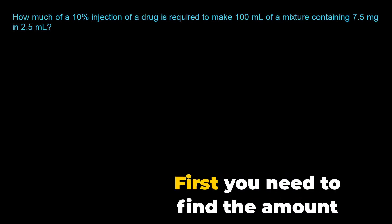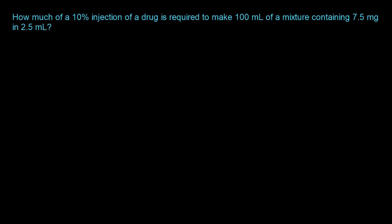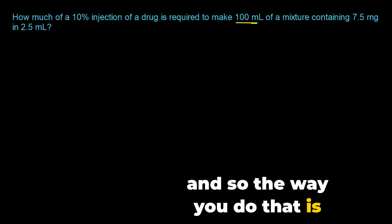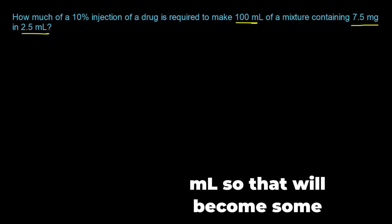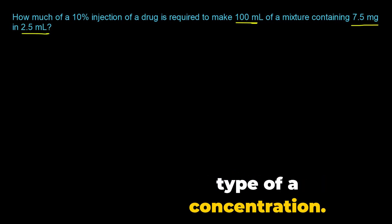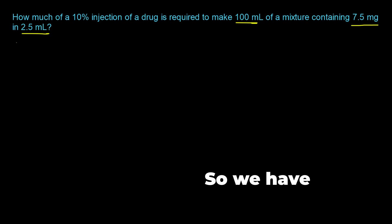So this is how you solve this question. First you need to find the amount of drug in the 100 milliliter mixture. The way you do that is you take the 7.5 milligrams in 2.5 mL, so that will become some type of a concentration. So we have 7.5 milligrams in 2.5 milliliters.